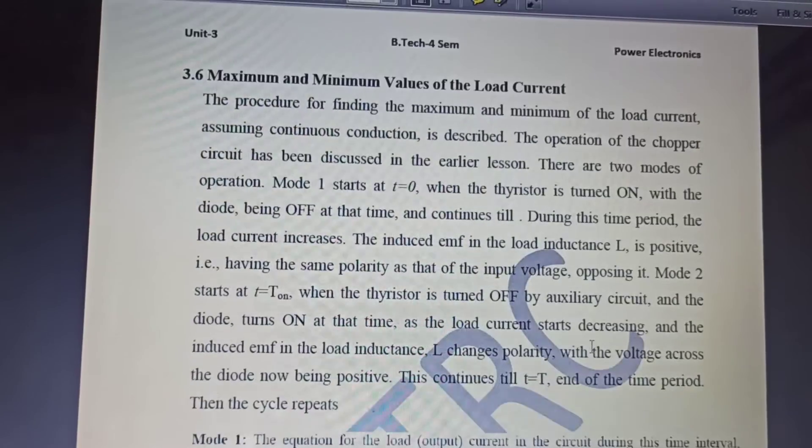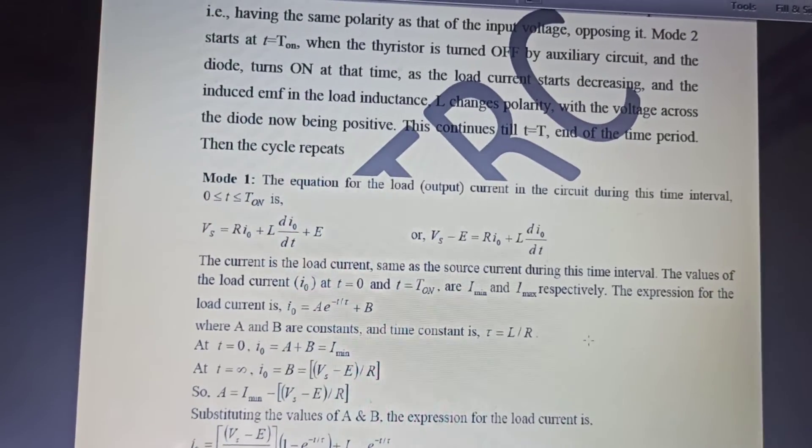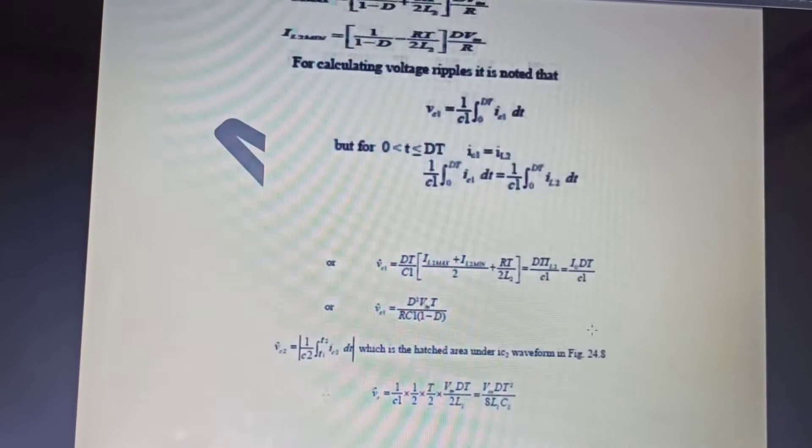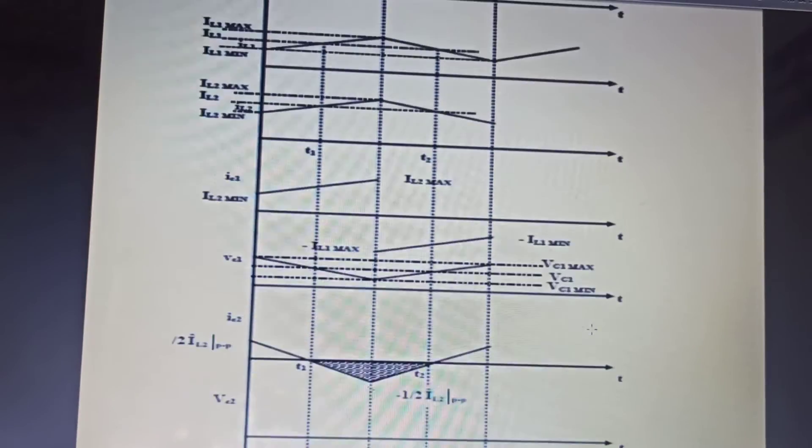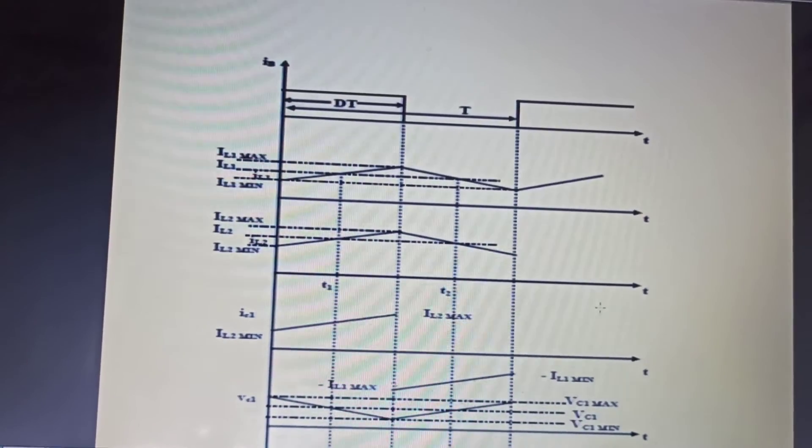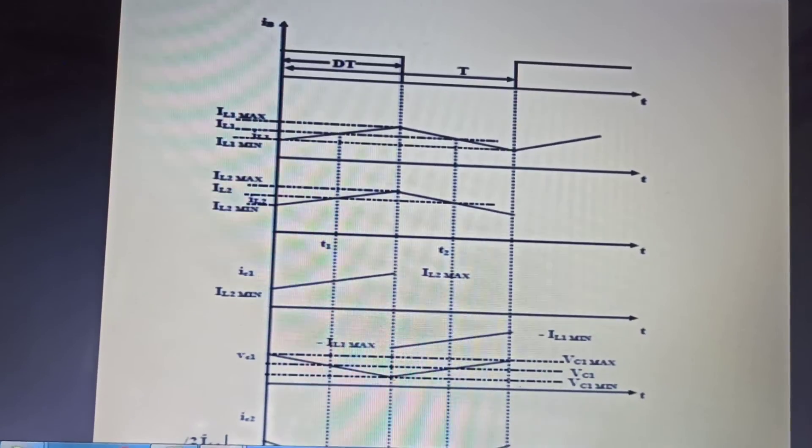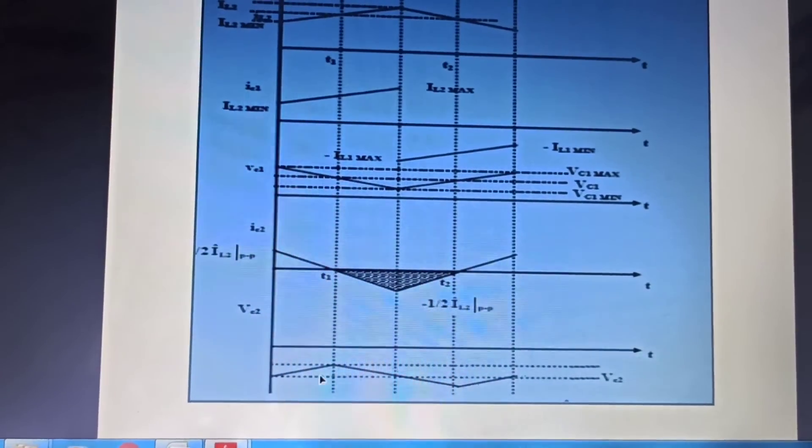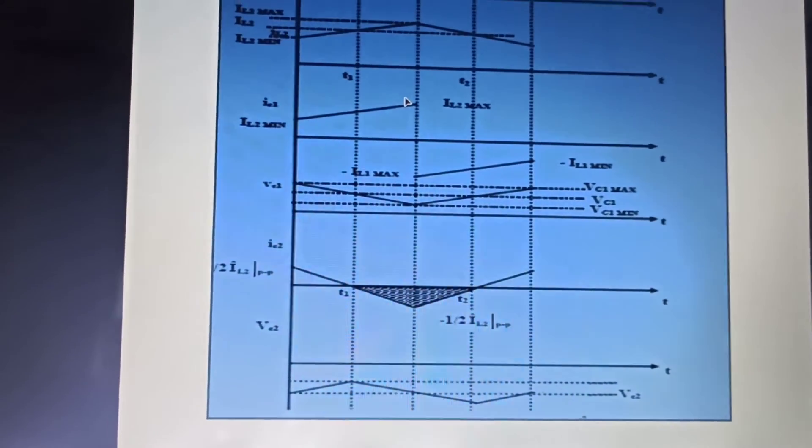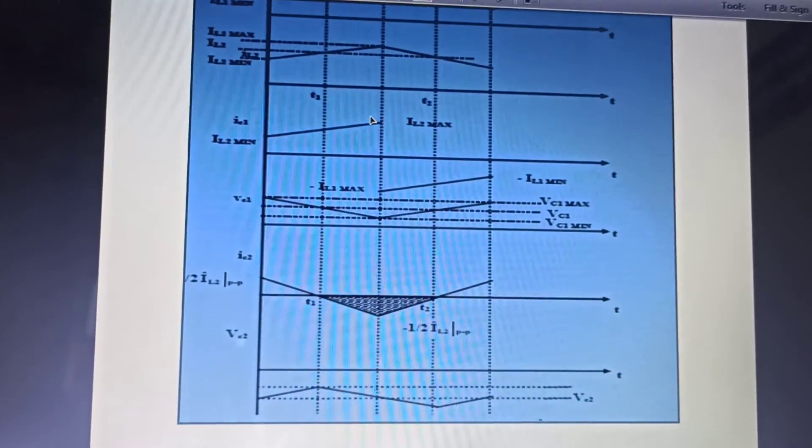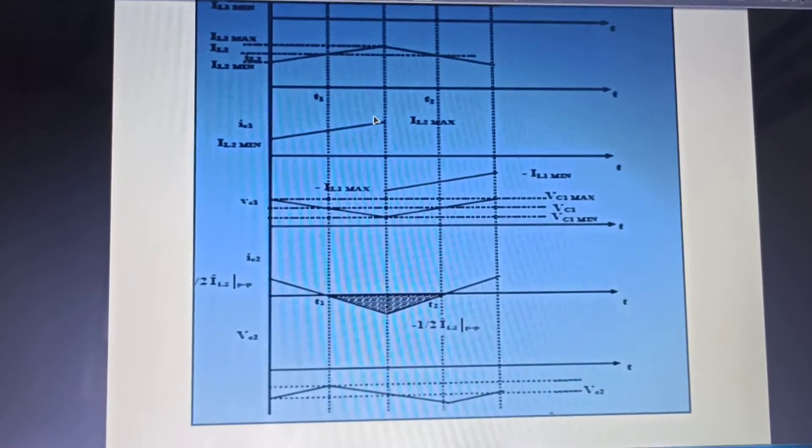Now have a look at this. I had discussed the maximum and minimum value of load current. Now I will come to one more point, that is analysis and waveforms. You can very well see that this is the inductor current and this is the voltage. So inductor current minus output current will give us the capacitor current, and corresponding to capacitor current we can plot the capacitor voltage. So this was a very important discussion.